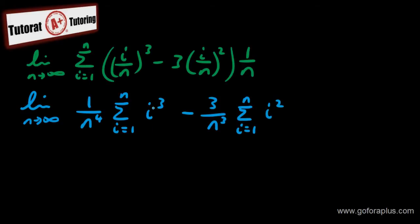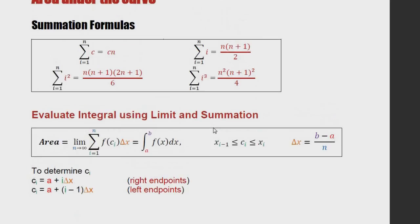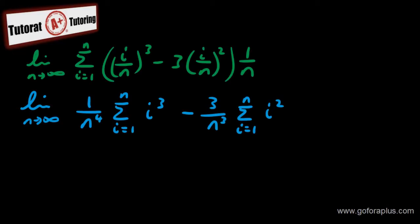Now how do I evaluate this summation, i cube and i square? I just need to look at my notes. I have my summation formulas right here. If it's i square, I will place it with this formula. i cube, I will place it with this formula.